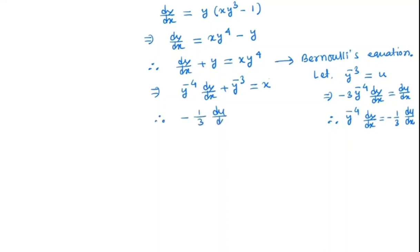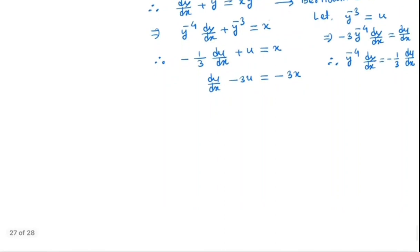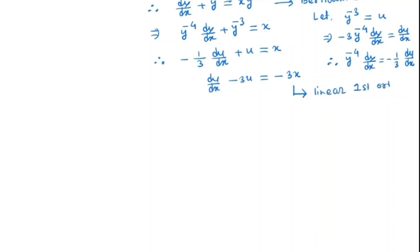Substituting, we get minus one-third du/dx plus u equals x, which gives du/dx minus 3u equals minus 3x. So we get a linear first-order ODE, and we know how to solve a linear first-order ODE.